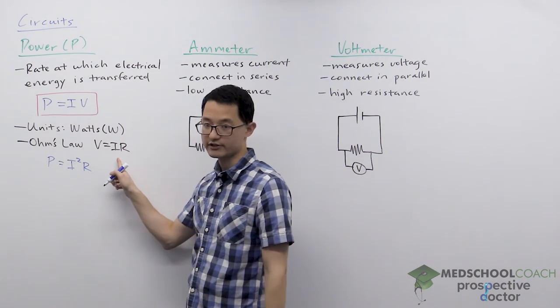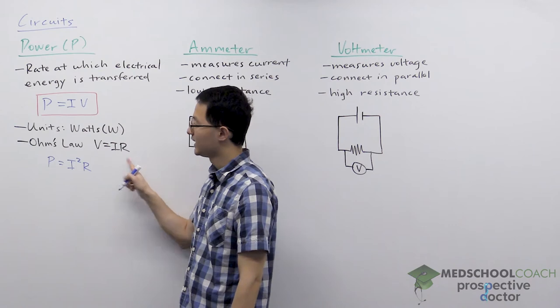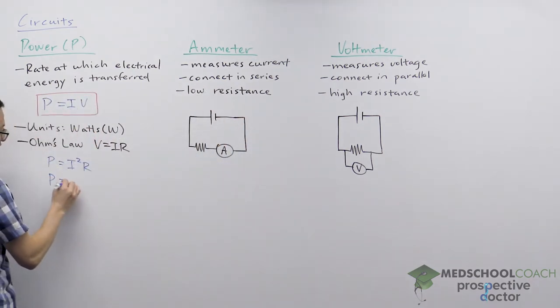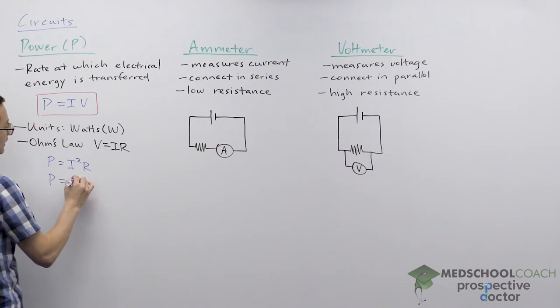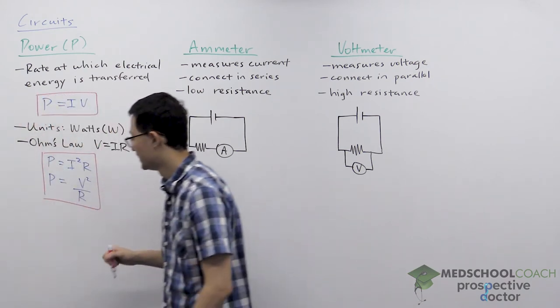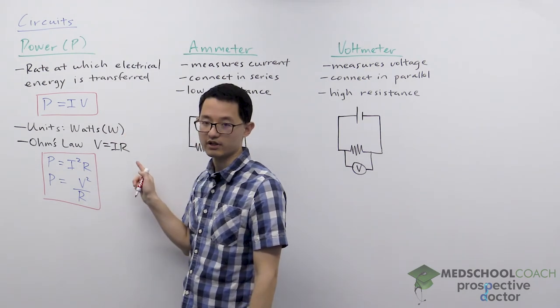If you want, you can also rearrange and solve for current. Current is voltage over resistance. If you plug that in for current, then you get another equation, which is power equals the voltage squared over the resistance. So this is technically two additional equations for power, but it's really nothing new because it's just combining Ohm's law with power.